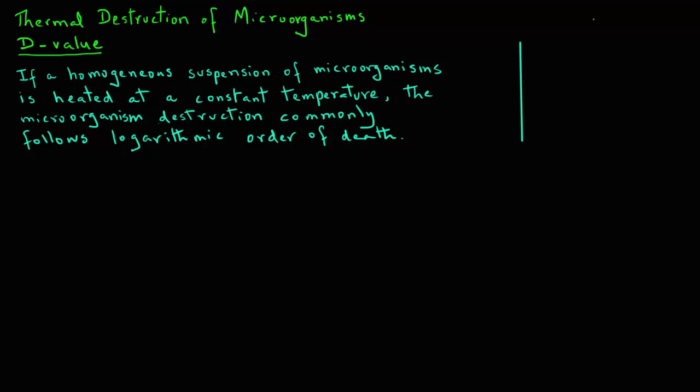Let's make a plot of number of microorganisms per unit volume. We will give it a symbol N versus time, and we will use the symbol T.